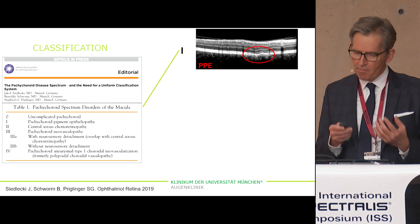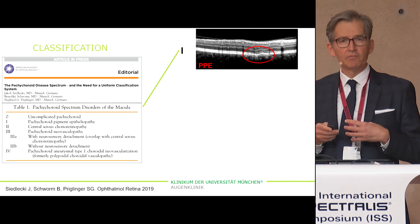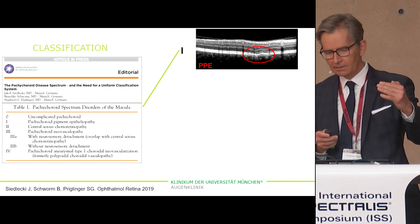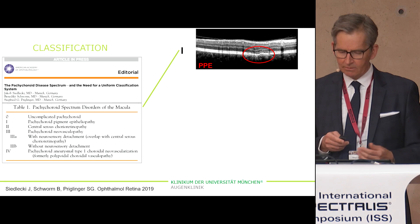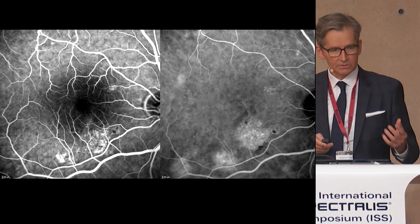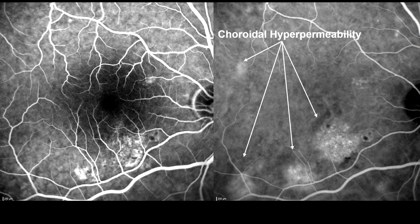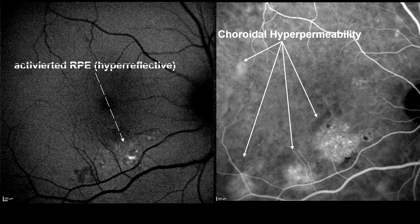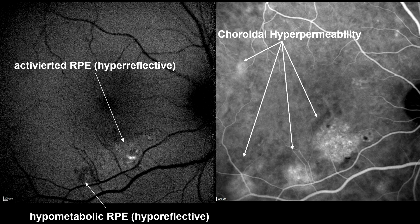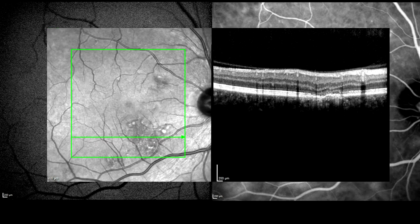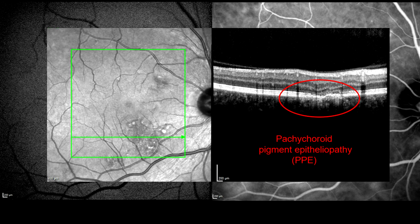Due to the hyperpermeability of the choroid, fluid is drained. The drained fluid presses against the RPE, leading to erosions of the RPE. We can see this in fluorescein angiography as hyperreflective spots, and in ICG angiography you can see the choroidal hyperpermeability. We have a hyperreflective activated RPE on one hand, and also hyper- and hyporeflective RPE in the autofluorescence. All these features appear with the first stage — Pachychoroid pigment epitheliopathy.